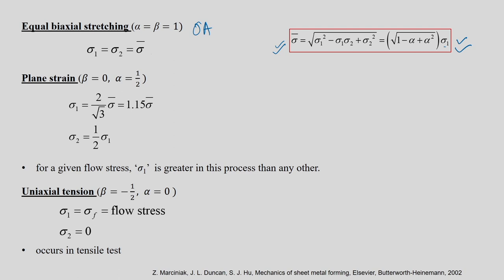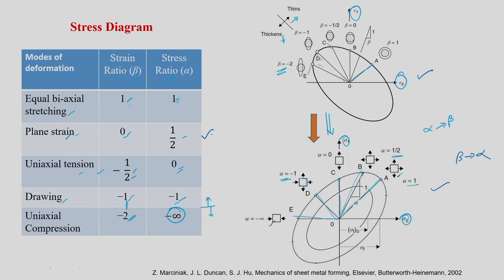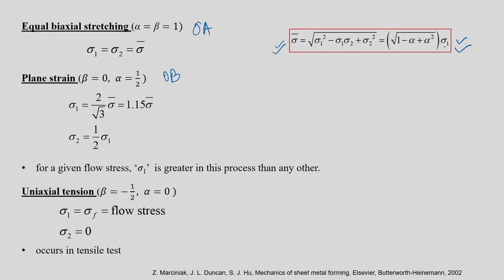For path OB, beta equals 0 and alpha equals half. If you put alpha equal to half, you get sigma_1 equals 2 over square root of 3 times sigma_bar, which is 1.15 times sigma_bar, and sigma_2 equals half times sigma_1. For a given flow stress, sigma_1 is 1.15 times sigma_bar — greater in this process than any other.